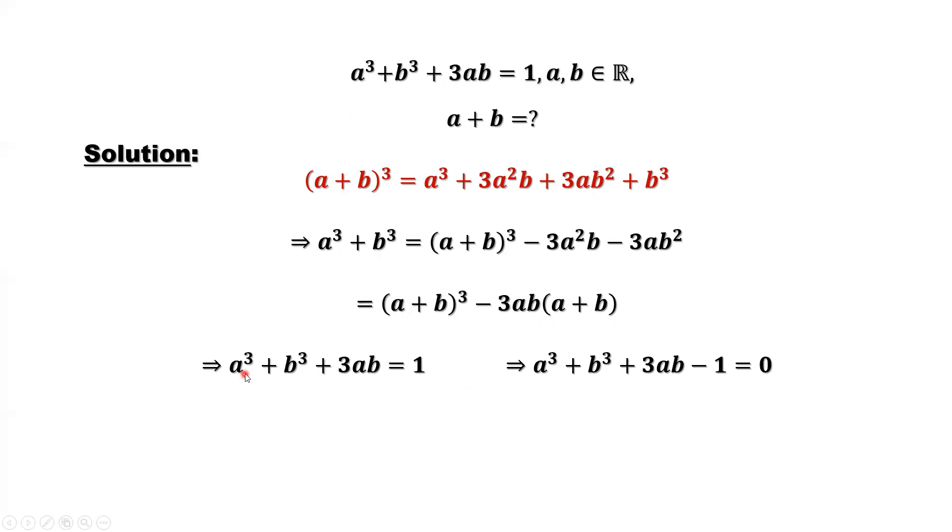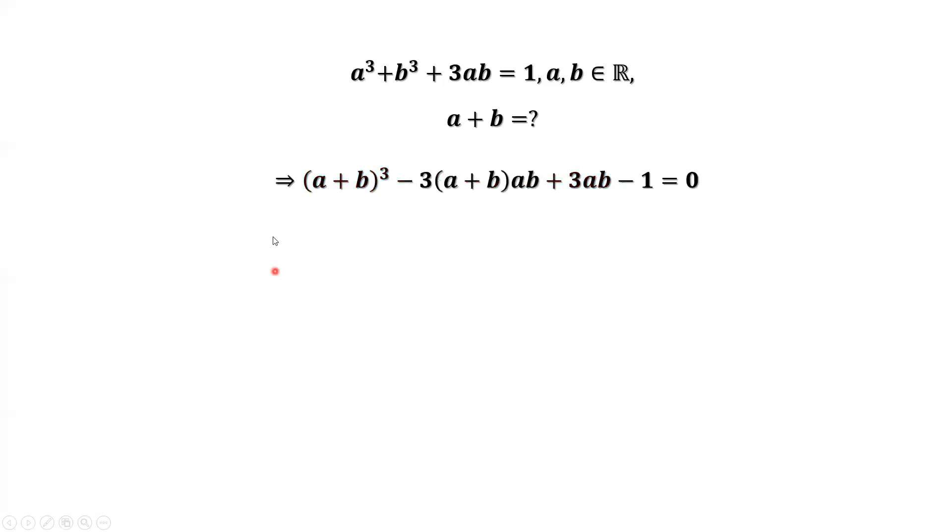For the given information, a³ + b³ + 3ab = 1. We move 1 to the left hand side. So here we can replace a³, b³ by this part we got from here. What we want to find? a plus b.